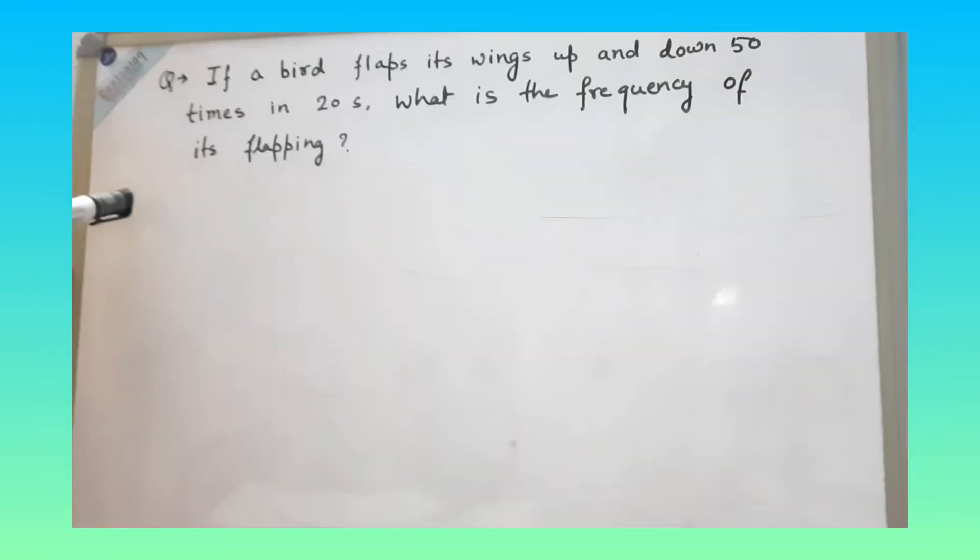This is another question related to frequency and time period. Question is, if a bird flaps its wings up and down 50 times in 20 seconds, what is the frequency of its flapping? So again in this question, they are asking frequency. And we know that frequency is number of vibration in 1 second. In question, it is given 50 times in 20 seconds.